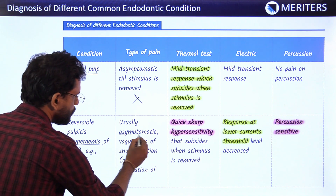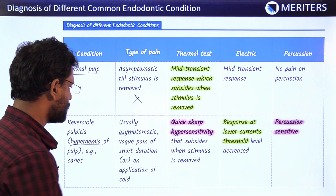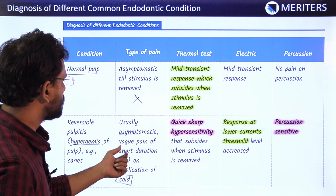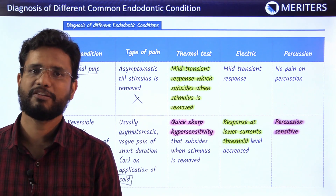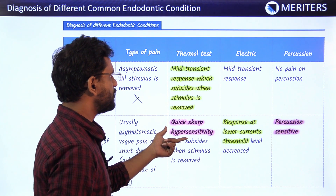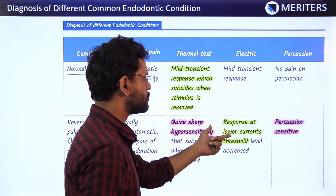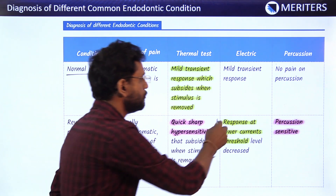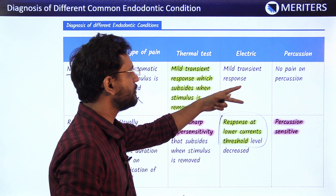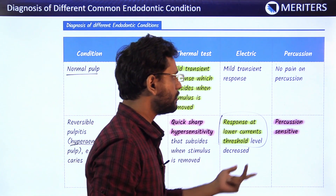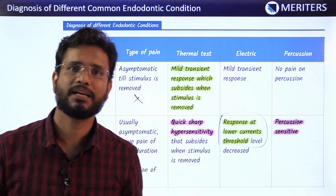In reversible pulpitis, the tooth is usually asymptomatic, but a weak pain of short duration is elicited with stimulus. Cold or other stimuli provoke symptoms only while the stimulus is present, or for a maximum of five minutes. Quick sharp hypersensitivity is seen on thermal testing that subsides when the stimulus is removed. On electric pulp testing, response is elicited at a lower current threshold than the normal pulp — this differentiates reversible pulpitis from normal. Percussion can be sensitive if infection has reached the apical area.